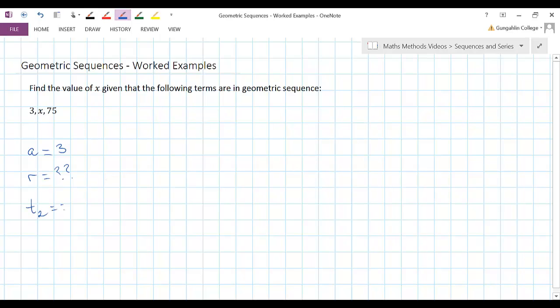The second term is x, that's what we're trying to find. And the third term is 75.